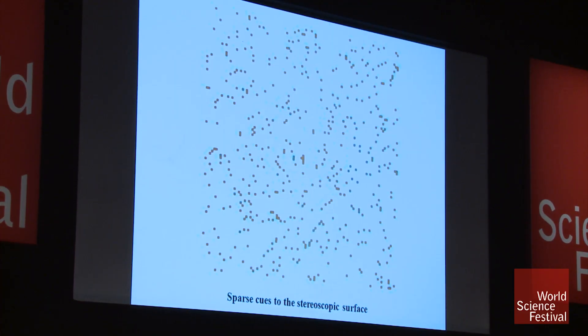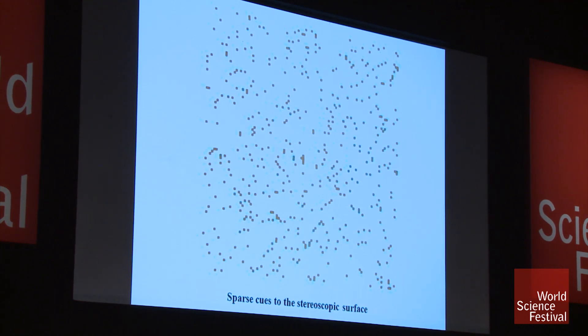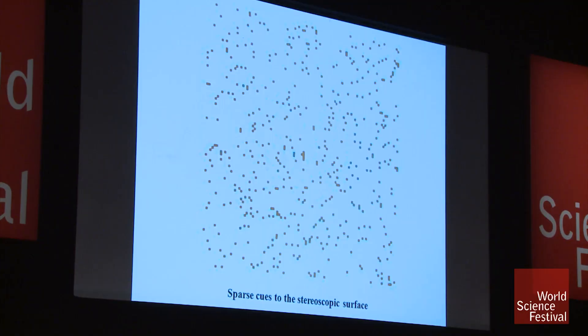What about the white spaces between the dots? There's no information there — they're just white spaces. And yet you see that they have a surface: the center part is a surface connecting the dots, and the background part is a different surface connecting those dots.